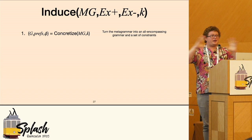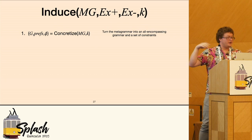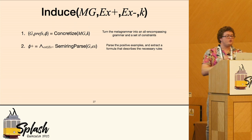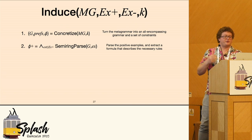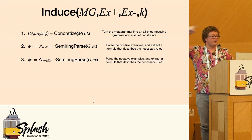It's just this huge union as well as some preferences and the constraints. So we do this extraction. Then we use this giant generated grammar and we do a semi-ring parsing algorithm on the positive examples. The semi-ring parsing algorithm will extract a formula that describes the necessary rules. And we do the same for the negative examples, although we take the negation of the formula because we don't want to include those necessary rules.